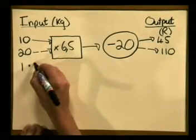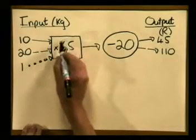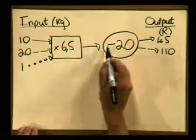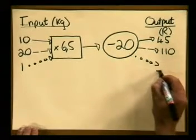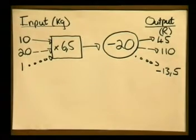What does that last value mean — why is the output value negative? Remember our flow diagram represents how much profit we make, not how much we get paid. If our input value was x equals 1, the output was minus 13,5. If we sold one kilogram of cans we'd get paid 6 rand 50, but our transport costs would be 20 rand — we'd be paying more than we were earning and would not be making a profit. Now let's figure out how many kilograms of cans we need to sell to start making a profit.